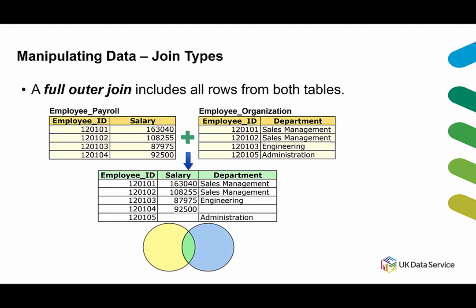By contrast, a full outer join includes all rows from both tables, but creates a lot of missing values. For example, if a row in the merged dataset doesn't have a department from the second table, that field is missing. Similarly, if a row doesn't have a salary from the first table, that is another missing value.